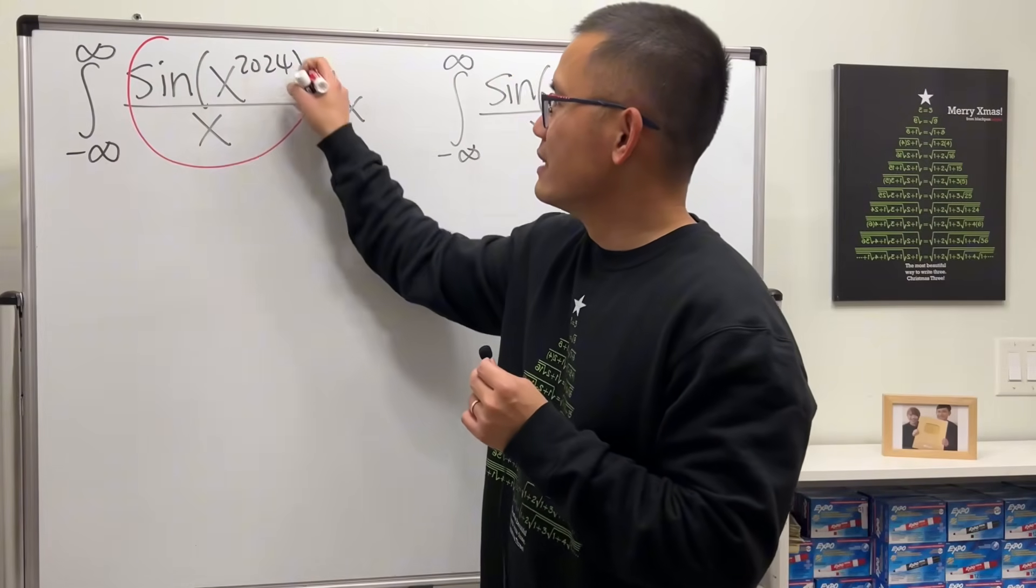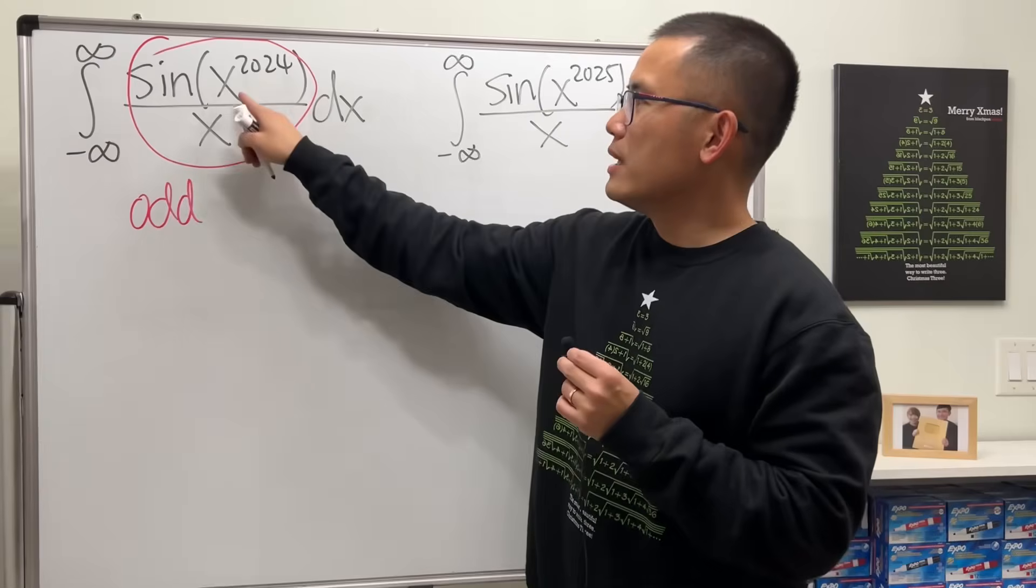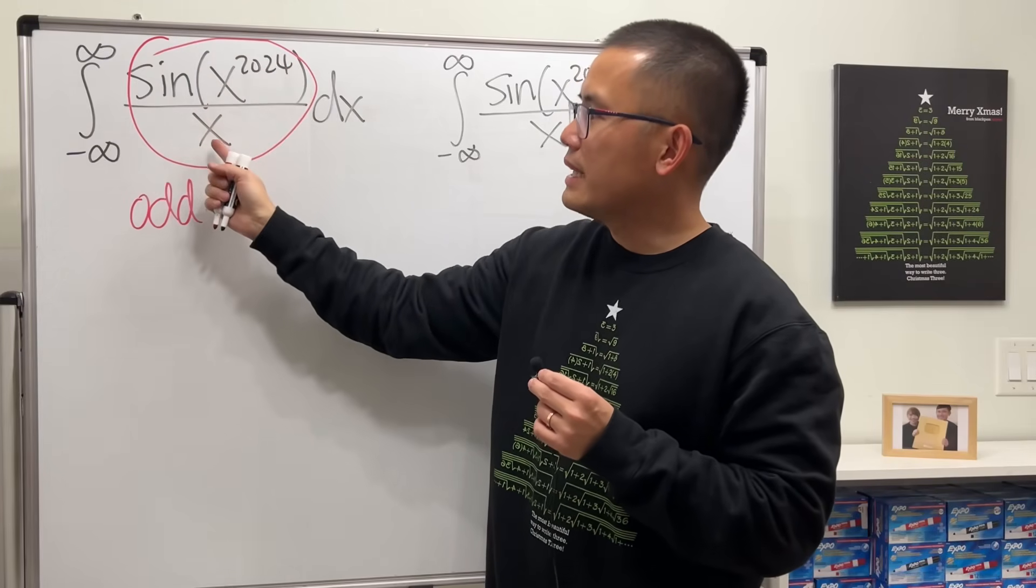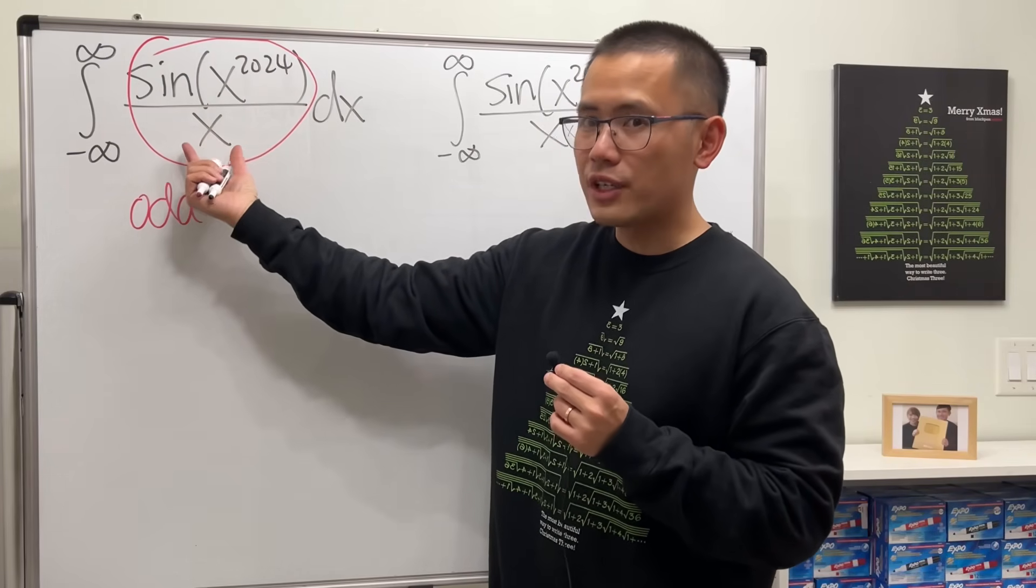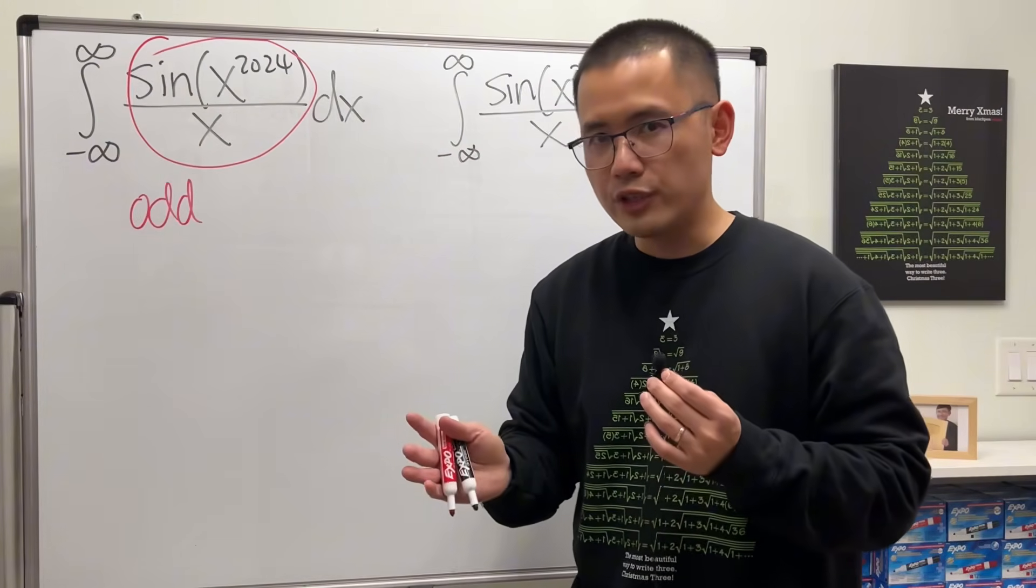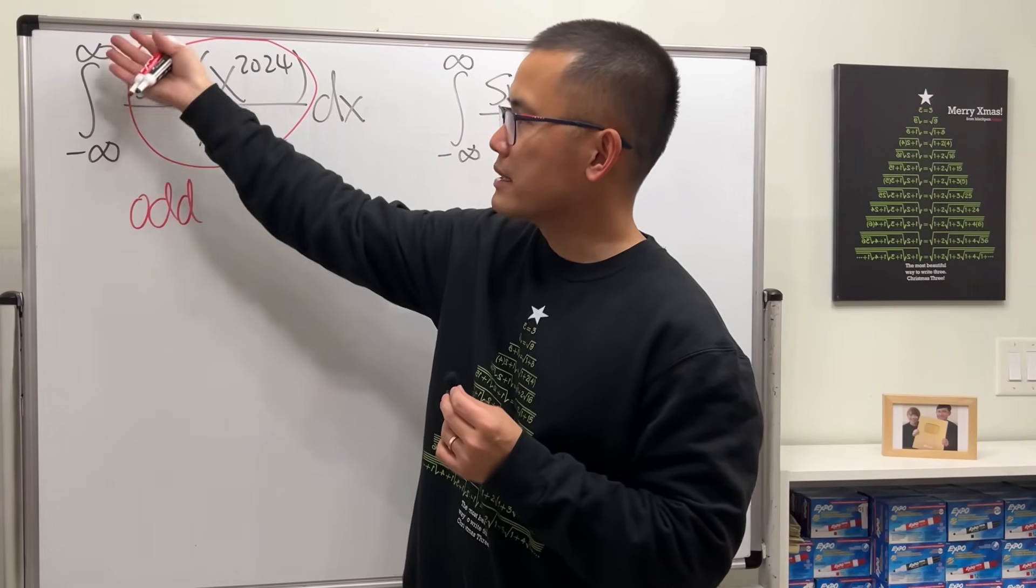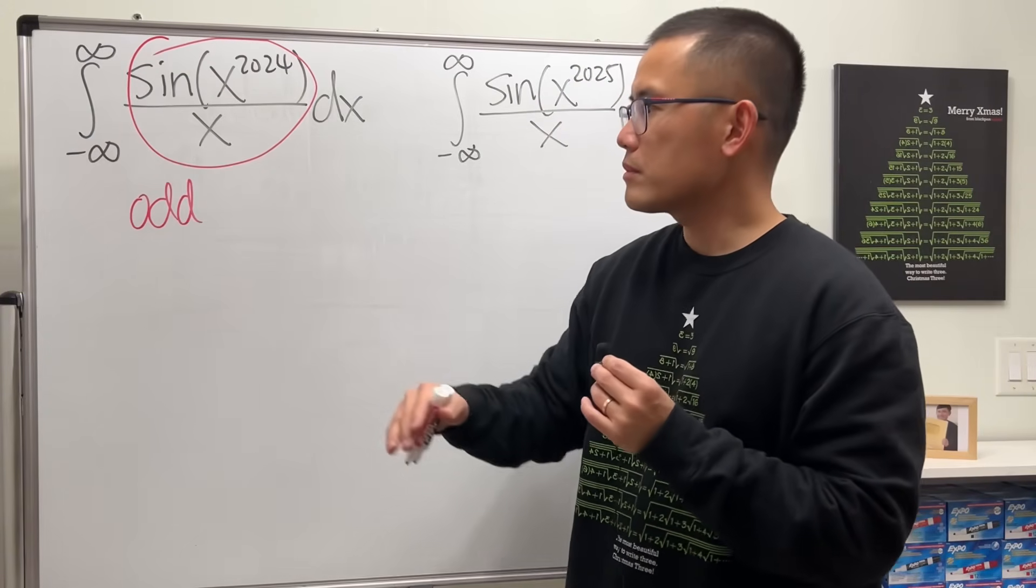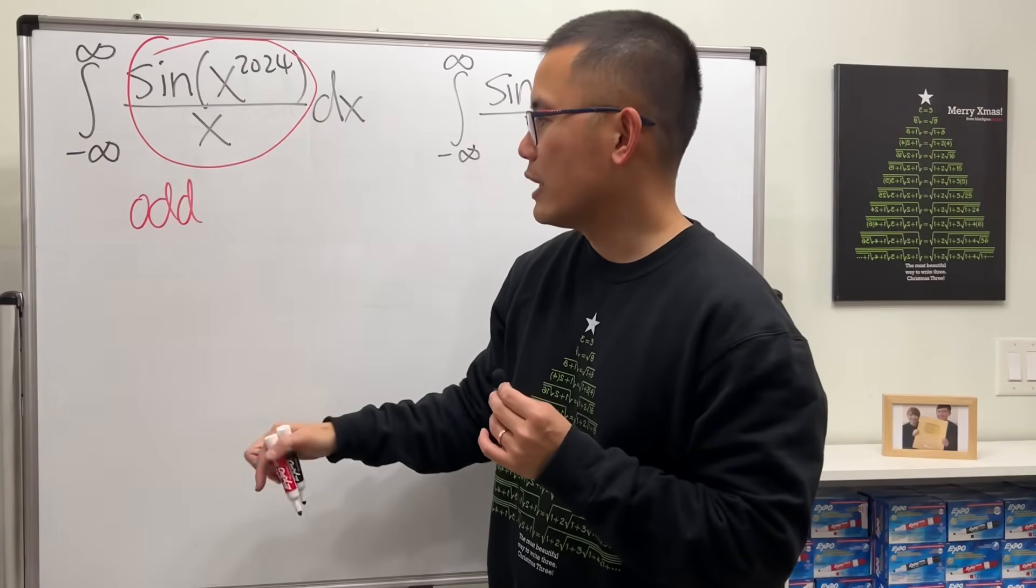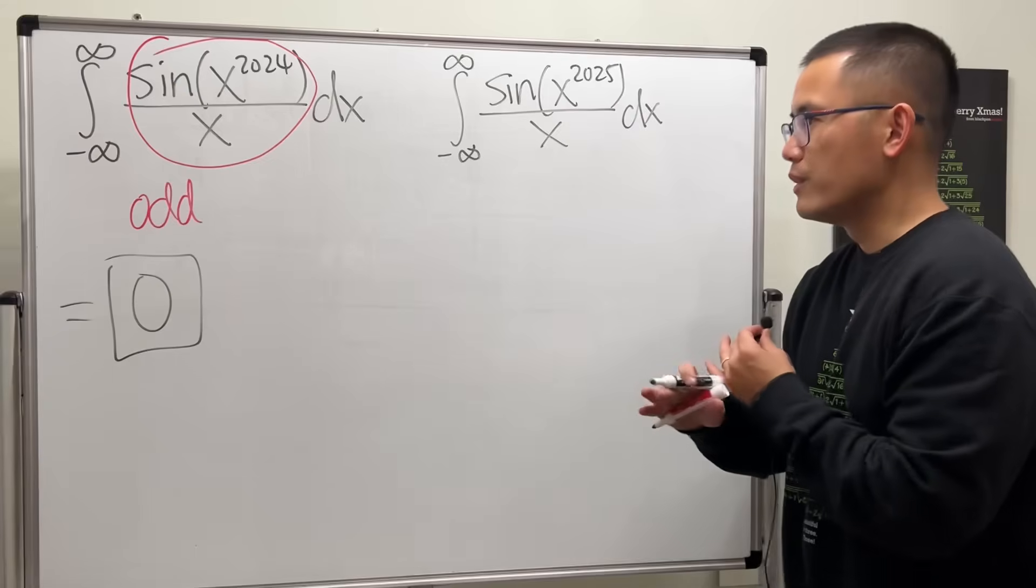Well, because the integral right here is actually just an odd function, because x to the 2024th is even, and then sine of the even is an even function, but x to the first is an odd function. And because if you go from 0 to infinity, it converges, and when you go from negative infinity to positive infinity, because one side converges and it's an odd function, then negative and positive they will cancel each other out completely. So the answer for this right here is just equal to 0, and then done.